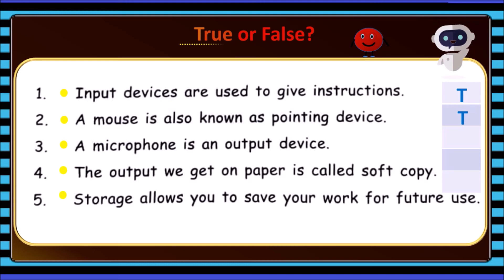A microphone is an output device. False. The output we get on paper is called soft copy. False. What is it called? Hard copy. Correct.